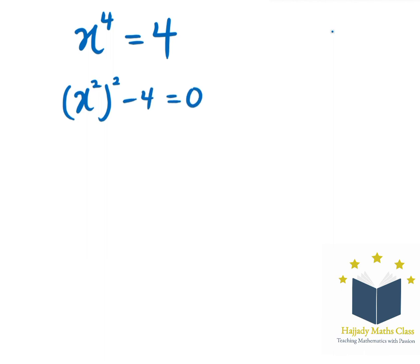So this is the same thing as saying x squared to the power of 2 minus 2 to the power of 2 equals to 0.